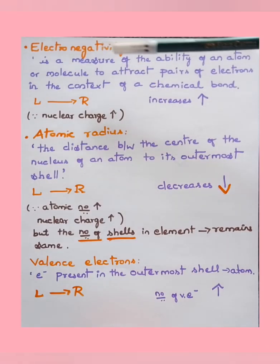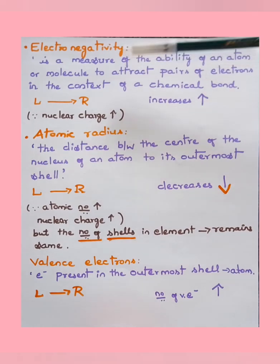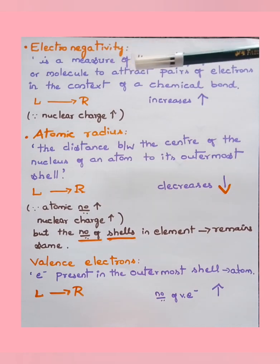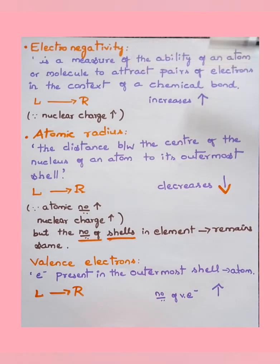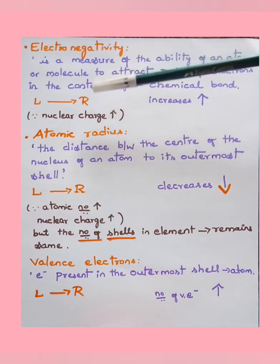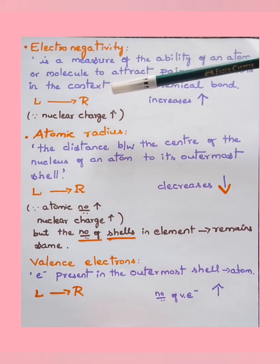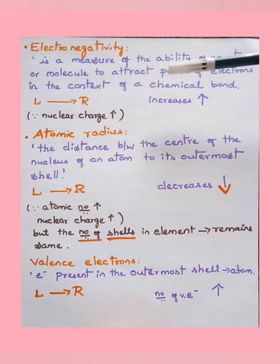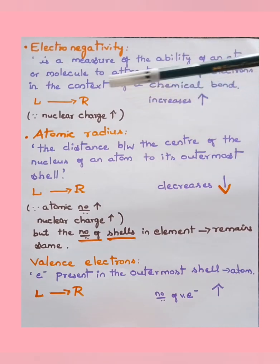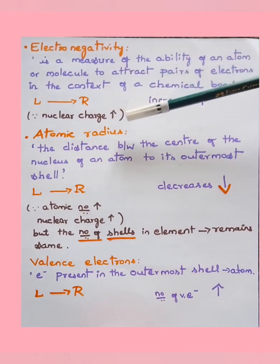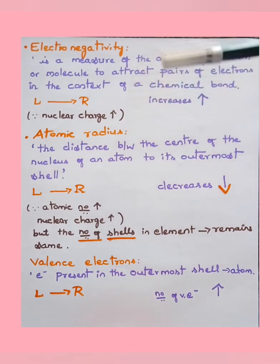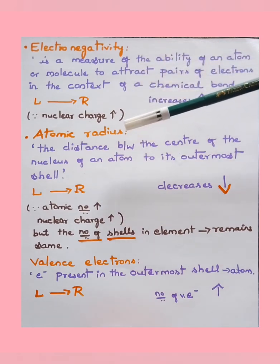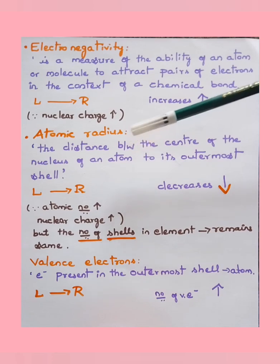Electronegativity is a measure of the ability of an atom or molecule to attract a pair of electrons in the context of a chemical bond. As we move from left to right of the periodic table, electronegativity increases, because the nuclear charge increases.